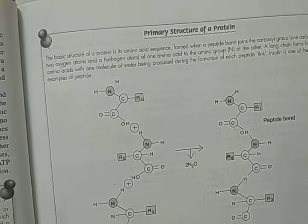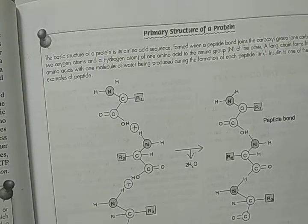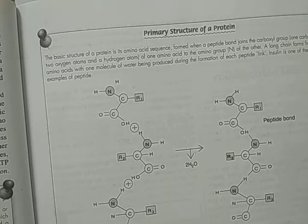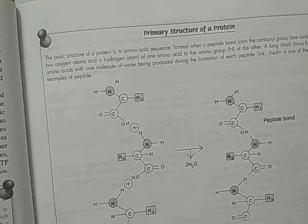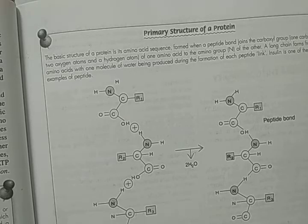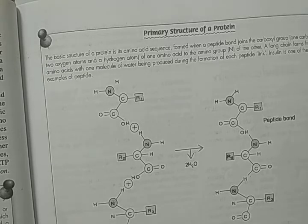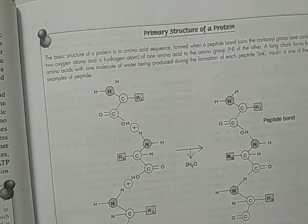Next, we will see about the tricarboxylic acid cycle, or the Krebs cycle. The aerobic respiratory process uses the chemical products produced during fermentation. Those products formed during fermentation are processed in the tricarboxylic acid cycle, also called the Krebs cycle.